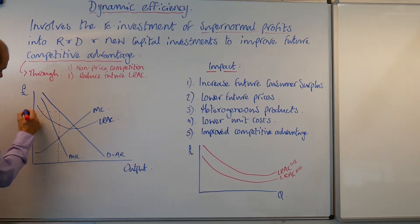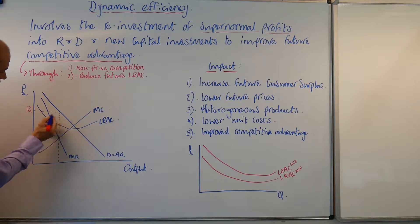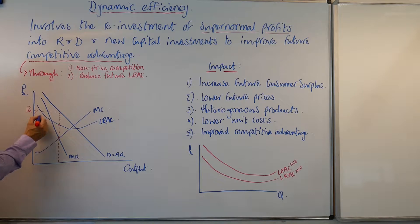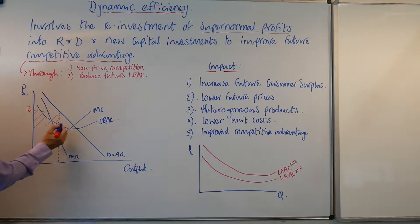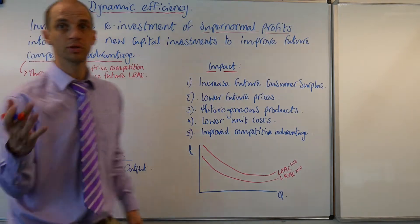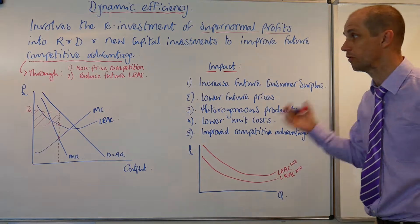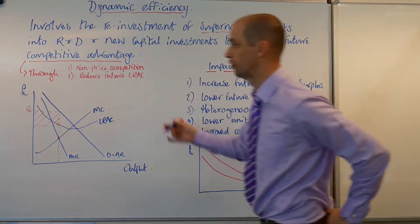Look at where the average revenue is greater than the average cost, and we can therefore see that this entire area here would represent the supernormal profits of this given firm.